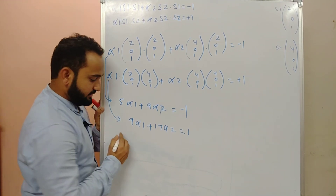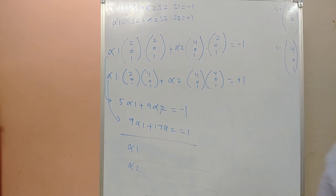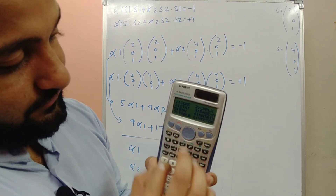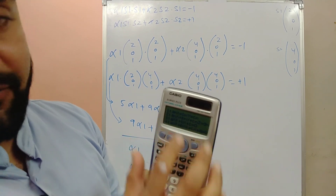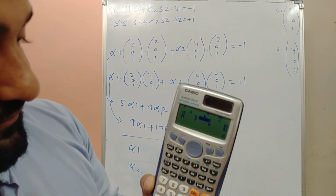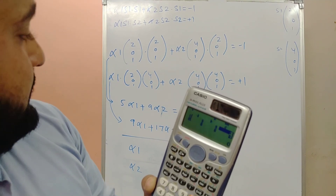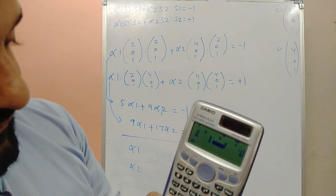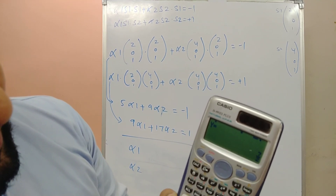We got two linear equations — now solve them to get the values of alpha_1 and alpha_2. Using a Casio 991ES calculator: go to Mode, select option 5 (Equation), then option 1 for two unknowns. Enter the coefficients: for the first equation 5, 9, -1 and for the second equation 9, 17, 1. The results come out to be alpha_1 = -6.5 and alpha_2 = 3.5.